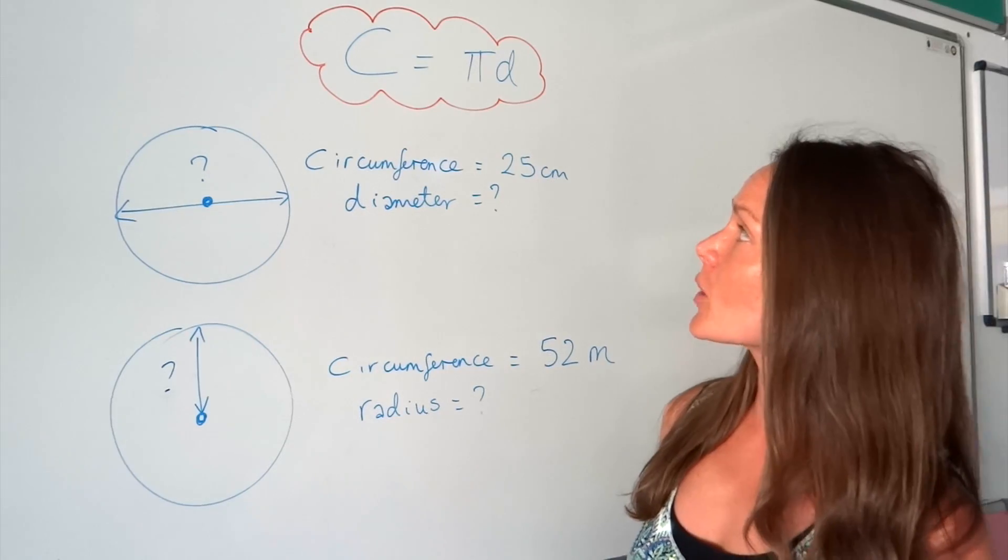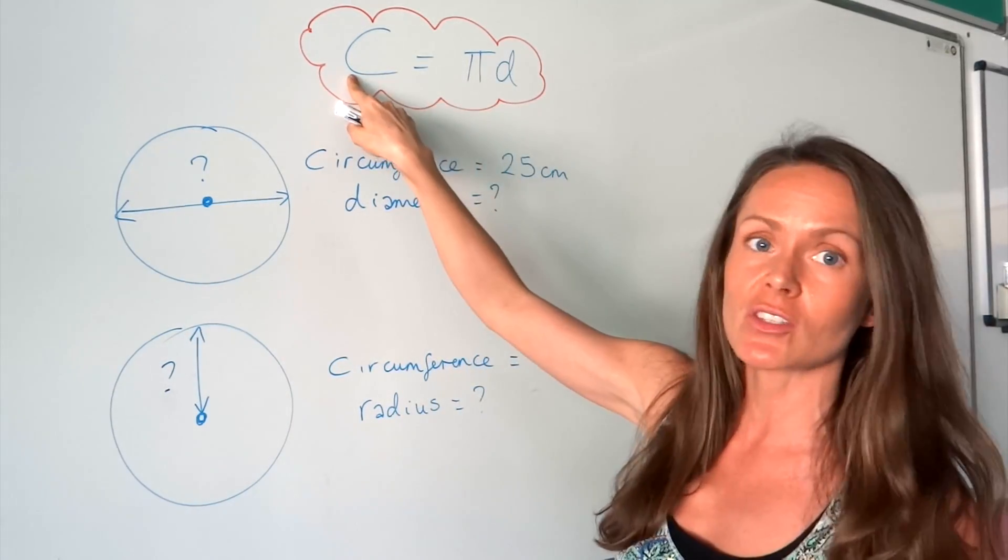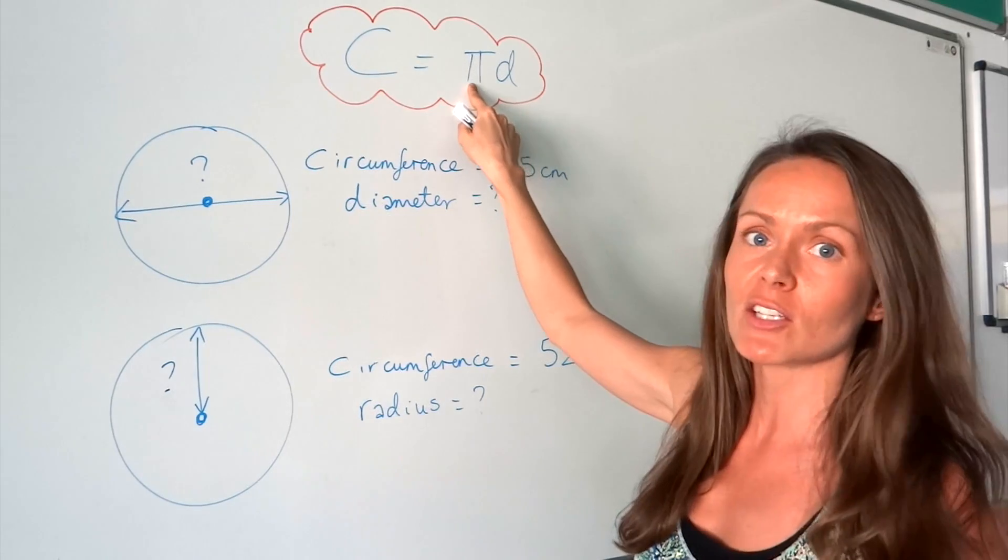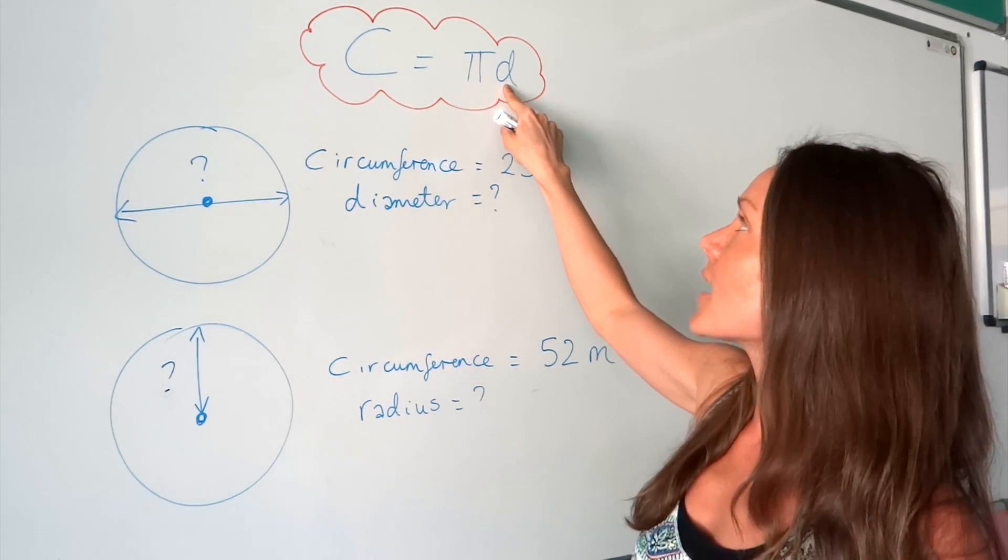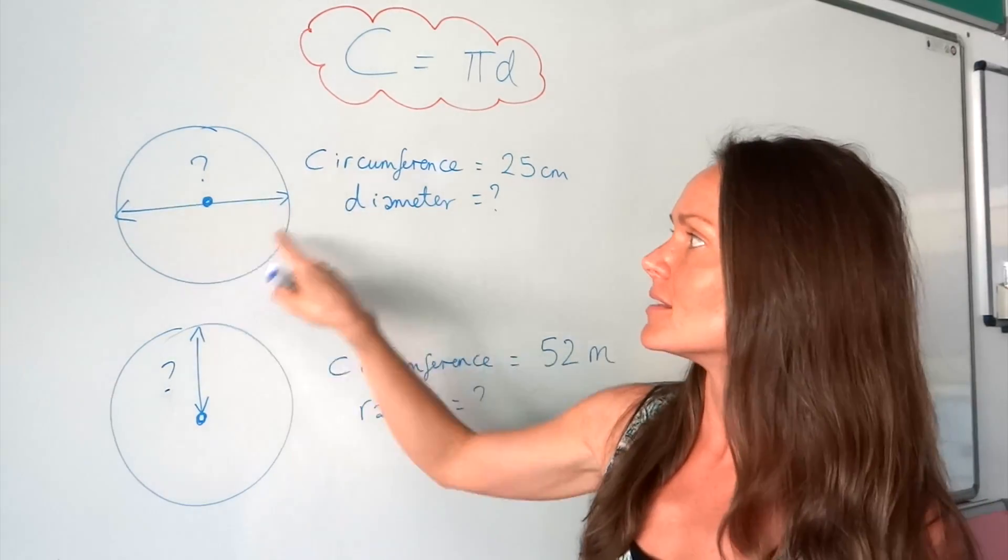The equation to work out circumference is C equals π d. C is the circumference, π is the irrational number 3.142, and the diameter is the distance all the way across the circle, like in this diagram here.